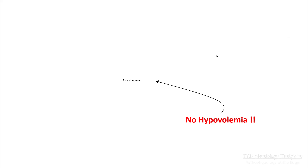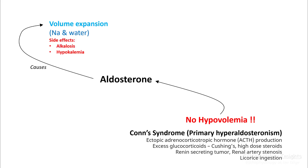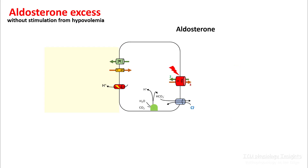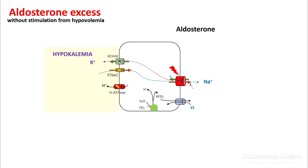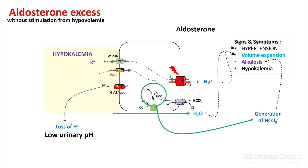There are other conditions in which you can have elevated aldosterone not stimulated by hypovolemia, including primary hyperaldosteronism, ACTH production, excess glucocorticoids, etc. In these cases, aldosterone will still cause volume expansion by sodium and water retention, alkalosis, and hypokalemia, resulting in higher blood pressure. Aldosterone stimulates sodium channels, potassium channels, sodium-potassium ATPase, and hydrogen ATPase, resulting in sodium absorption, potassium loss, and proton loss in the urine — thereby generating bicarb and resulting in hypertension, volume expansion, alkalosis, and hypokalemia.